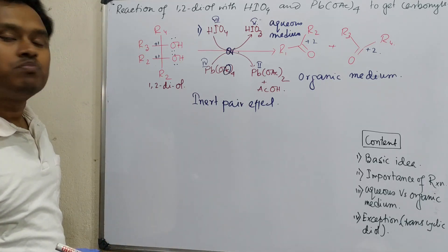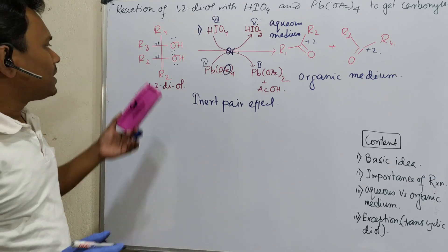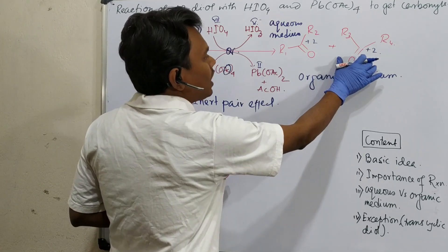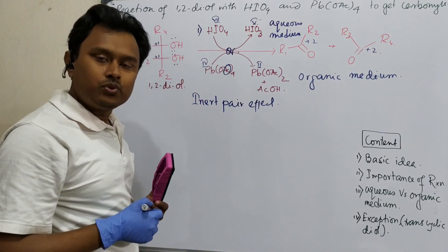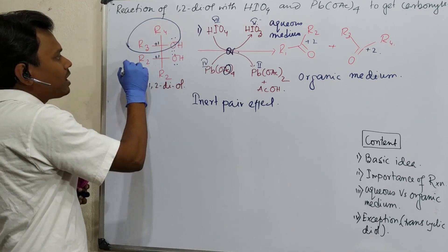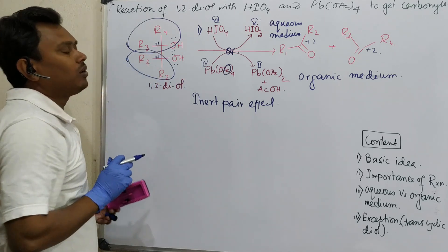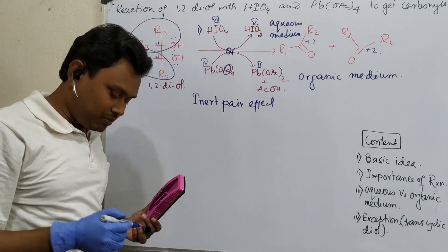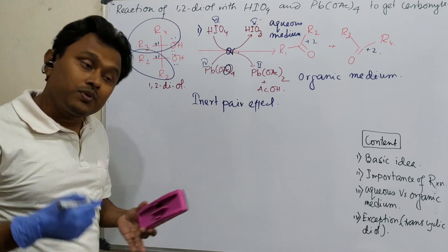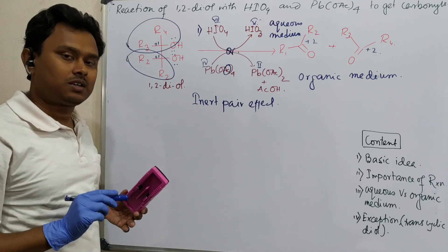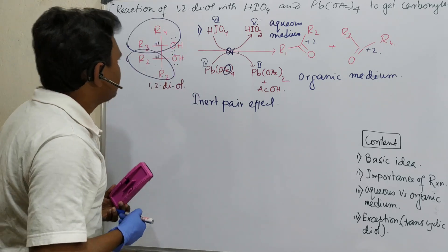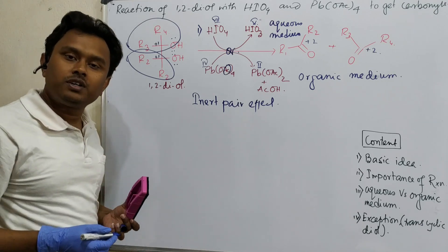Now let's discuss the importance of this reaction. First, through this reaction, if you can identify the two carbonyl compounds formed, then you can prove what the substitution pattern of the diol was — meaning what groups were on each carbon of the diol. In previous times, when highly sophisticated spectroscopic techniques were not available, this was a very good structural determination method.